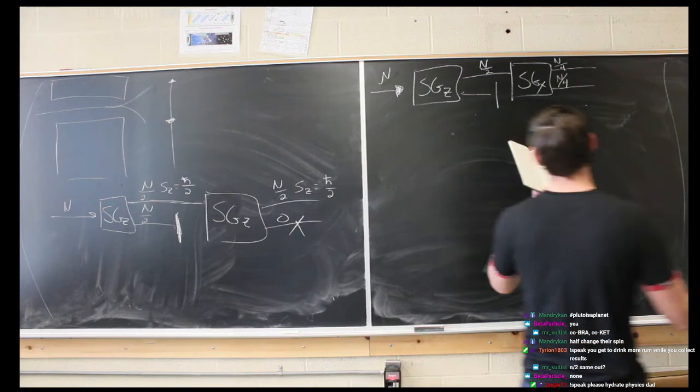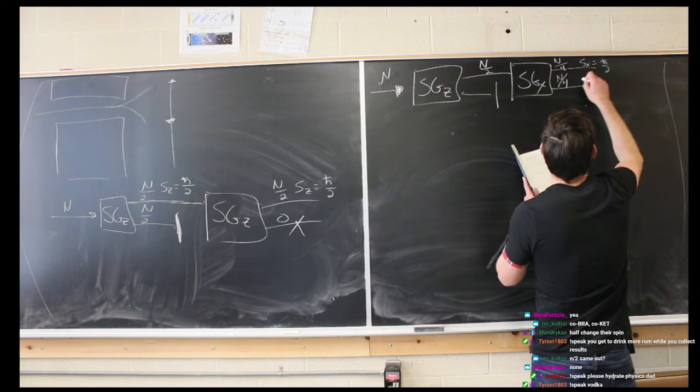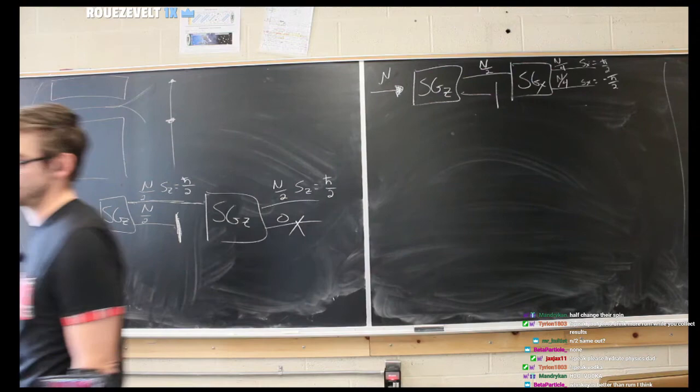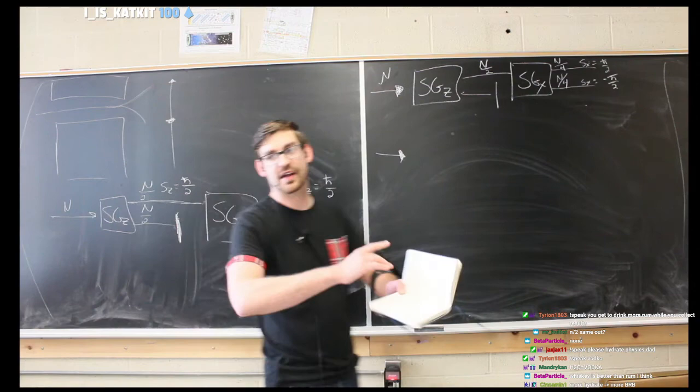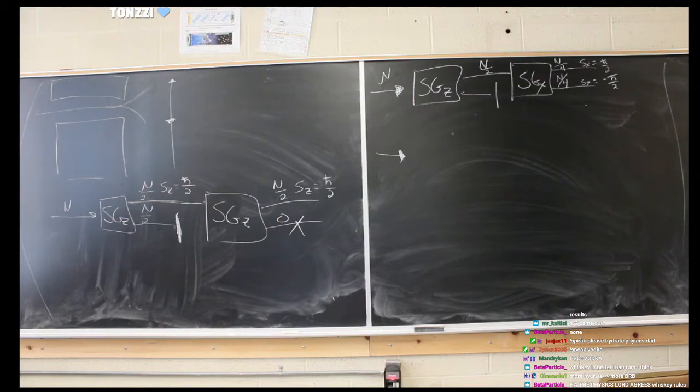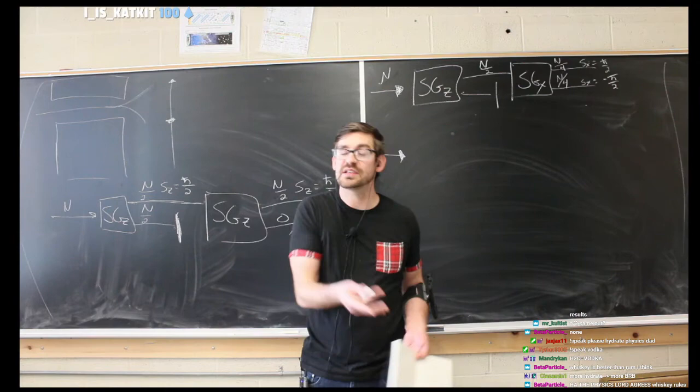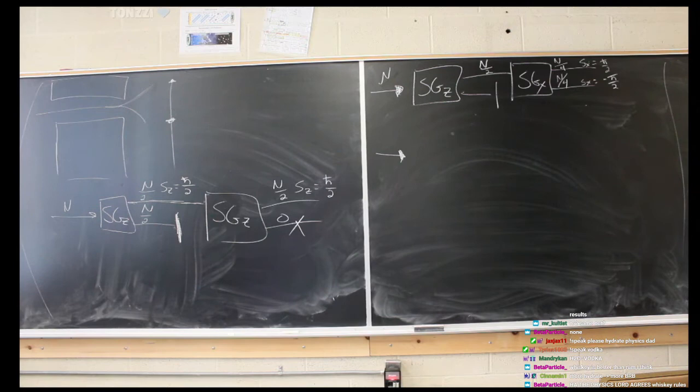Now we're in sx — h-bar over 2 in the x-direction and negative h-bar over 2 — and half the particles get split and reoriented in the x-direction. This isn't too weird: you change the orientation, the particles split again. Out of that N-over-2, if we think about the x-direction, half are going up and half down in x. It's perpendicular to z, so it seems reasonable — but it gets weirder.